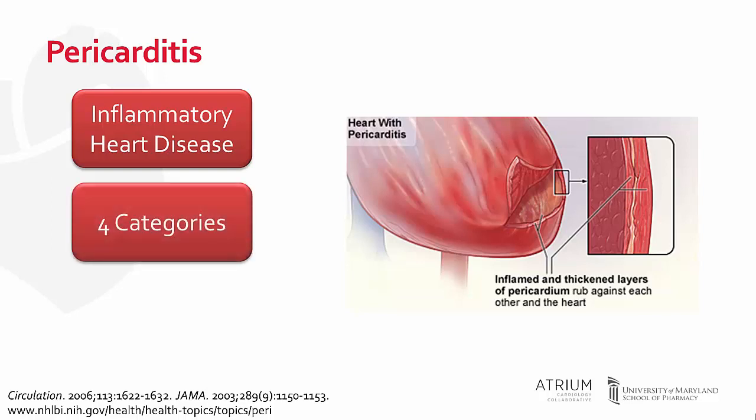There are four ways to characterize pericarditis. First, acute pericarditis is defined as a sudden onset of symptoms, whereas patients with chronic pericarditis exhibit symptoms that persist for greater than 3 months. Incessant or subacute pericarditis are when symptoms occur from 4 to 6 weeks up to 3 months.